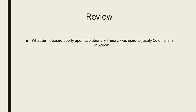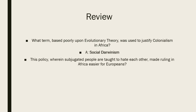Before we go further, I'd like to review. What term, poorly based upon evolutionary theory articulated by Charles Darwin, was used to justify colonialism in Africa? If you said Social Darwinism, you're correct. Social Darwinism is a corruption of Darwin's theory on the evolution of species. In Darwin's view, evolution happens to the most adaptive, not the strongest.